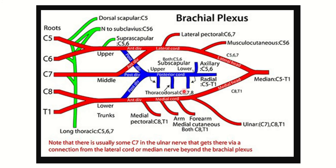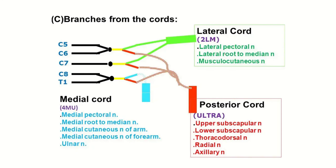In this functional diagram, the posterior cord is shown with its branches clearly. The terminal branches are the axillary and radial nerves, and the collateral branches are the upper subscapular, lower subscapular, and thoracodorsal nerves — all branching from the posterior cord.